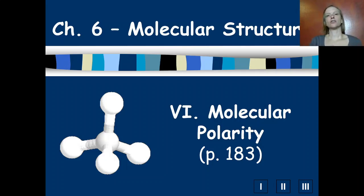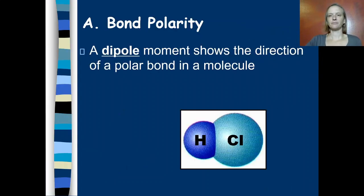We've learned how to draw Lewis dot structures, and then we learned how those Lewis dot structures affect the shape of molecules, covalent molecules. Now we're going to learn how the shape of molecules affects the polarity of molecules. So we need a few definitions here before we get started.